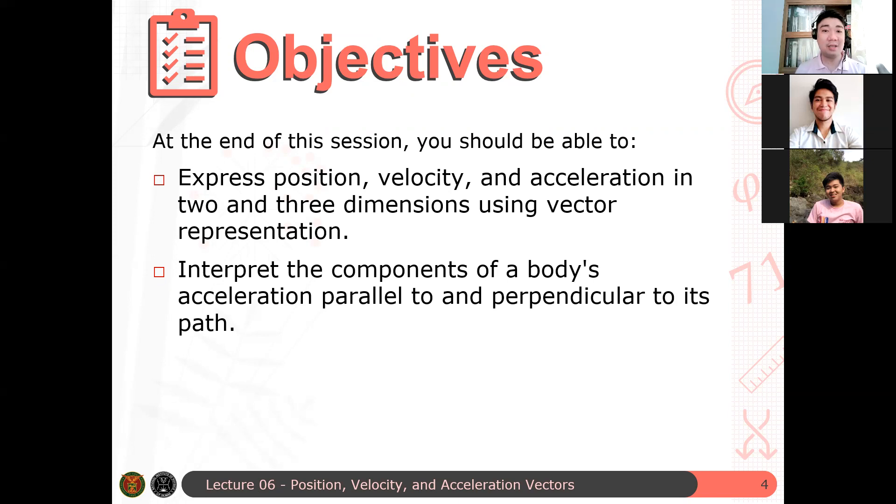And then interpret the components of a body's acceleration parallel to and perpendicular to its path. So a vector, because it can be decomposed into different components, you can always have a component wherein one of the components is parallel to the direction of the trajectory, and the other one is perpendicular to the direction of the path taken by the particle. In that case, you have a representation that's one that's parallel and one that's perpendicular.